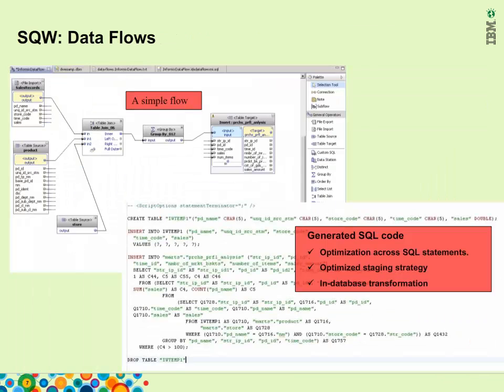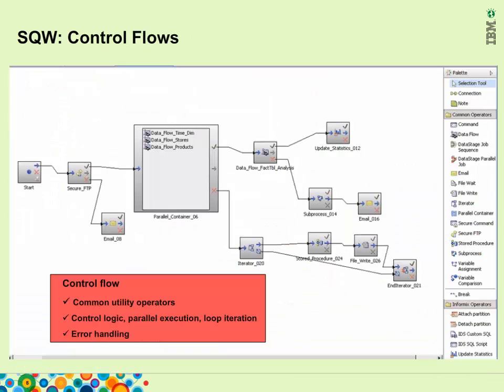Control flows include utility operators: SSH, FTP, command execution, email, file write, file wait, and easy-to-execute database operators such as stored procedure and update statistics. There are also programming logic operators, for example iterator, parallel, variable comparison, if/else, break, fail, and continue. The on-success (green tick), on-failure (red X), and unconditional (blue) connectors provide an error-handling mechanism. The generated code of a control flow is not SQL — it is called dpg (execution plan graph), which is SqW's own code. It is similar to try/catch/finally logic in Java.